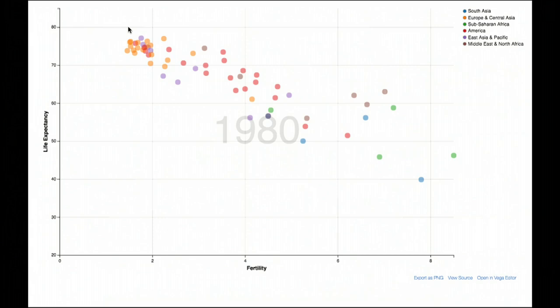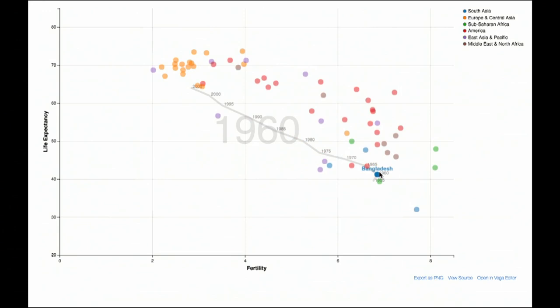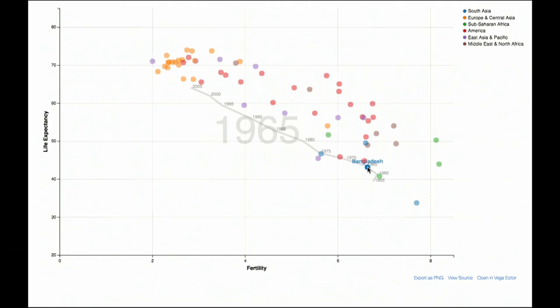We can see the distribution for different countries across the world. We might want to know more about them, so we might engage in interaction techniques. Here I can identify the point representing Bangladesh, and I see its trajectory through time. What are the different points this country has occupied with respect to fertility and life expectancy statistics? This gives me some peek beyond just this 1980 slice that I happen to be looking at currently.